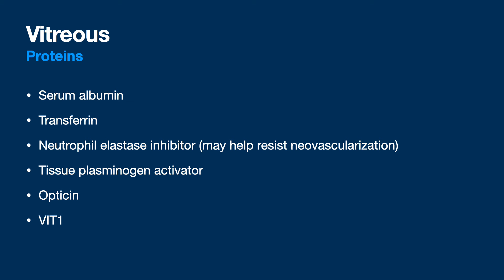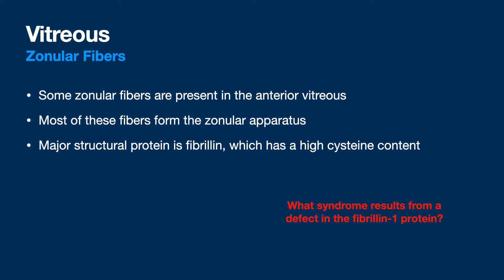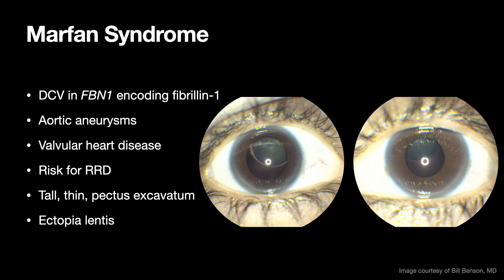In the vitreous you have a lot of proteins — probably thousands or tens of thousands of different proteins — which I don't think are highly testable, so we're going to move on. There are some zonular fibers present in the anterior vitreous. The matrix structure component is fibrillin and has a high cysteine content. Can anyone name a syndrome causing a fibrillin-1 protein problem? Marfan syndrome. Features include aortic aneurysms, valvular heart disease, risk for RD, pectus excavatum, and ectopia lentis. The most common causes of ectopia lentis include trauma and simple hereditary ectopia lentis, then Marfan syndrome.